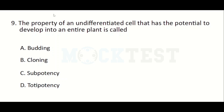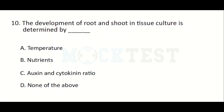The property of an undifferentiated cell that has the potential to develop into an entire plant is called — Option A: Budding, Option B: Cloning, Option C: Subpotency, Option D: Totipotency. The answer is Totipotency.